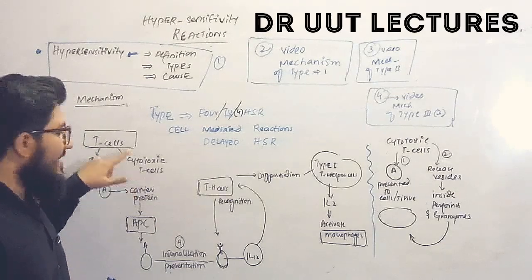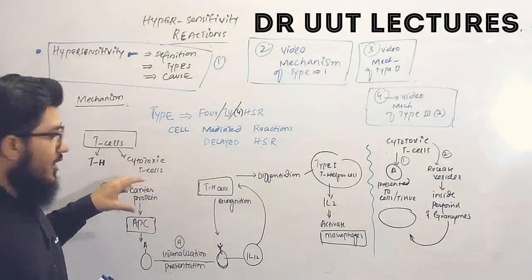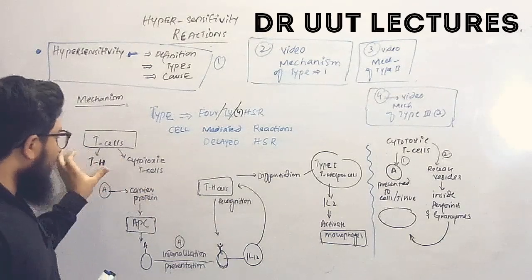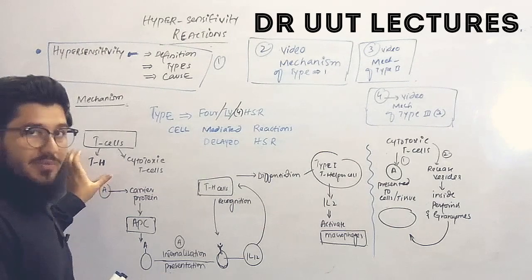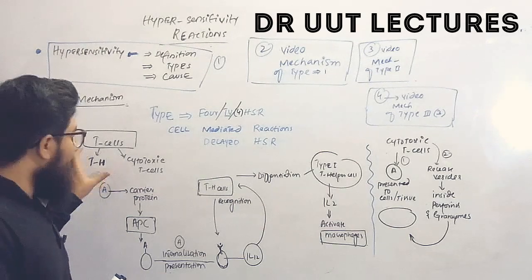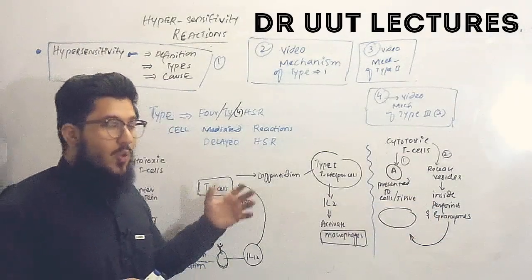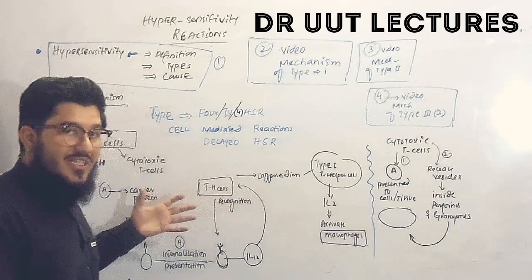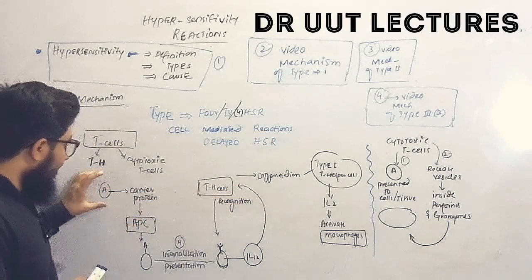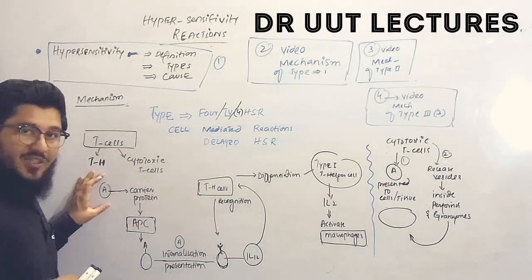In type 4 reactions, T helper cells and cytotoxic T cells are involved. Let's first discuss the T helper cells, then we will talk about the cytotoxic T cells.